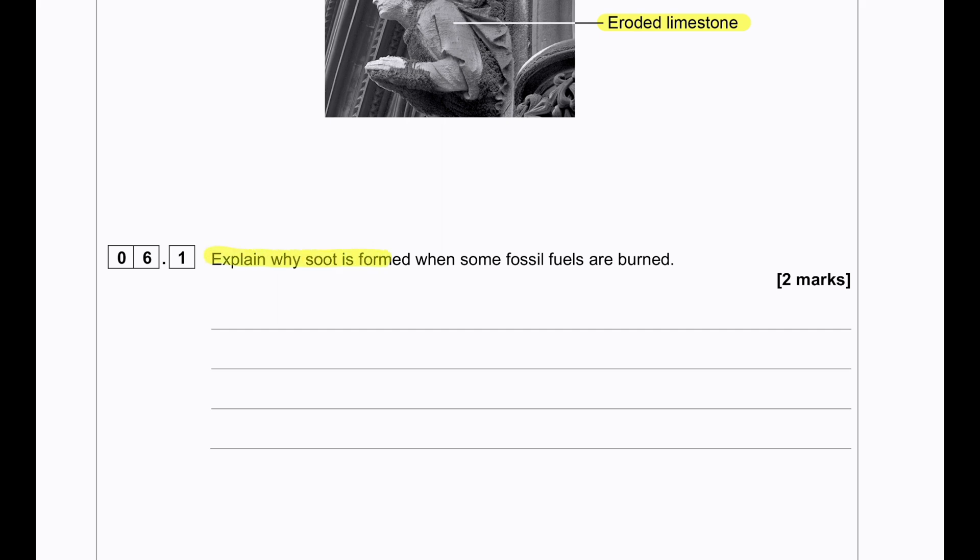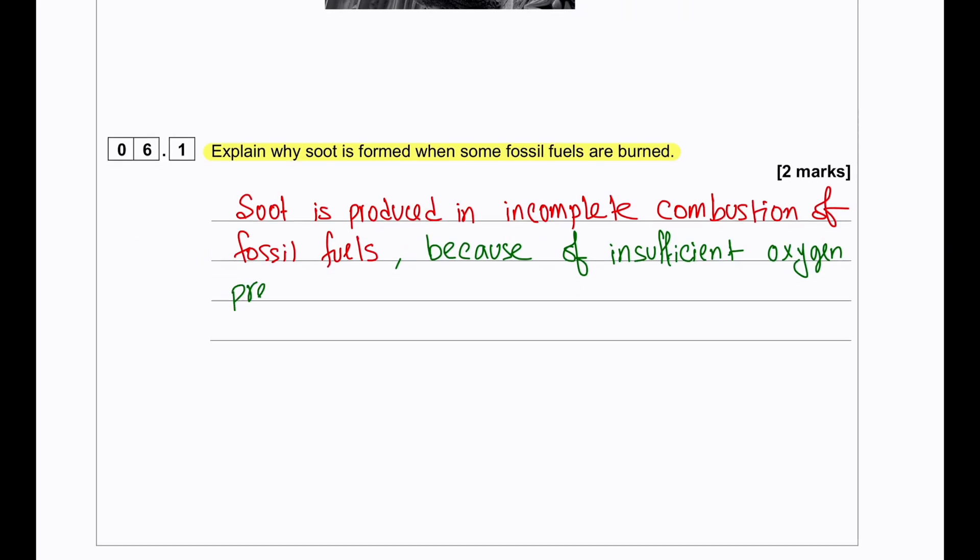Explain why soot is formed when fossil fuels are burned. Soot is formed due to incomplete combustion of fossil fuel because there were insufficient amounts of oxygen present during the burning process.